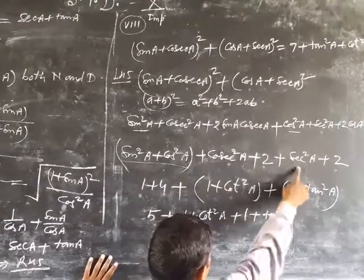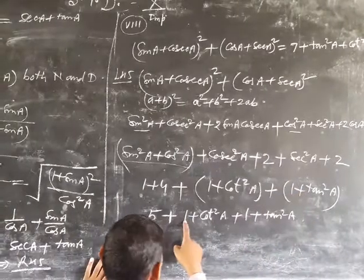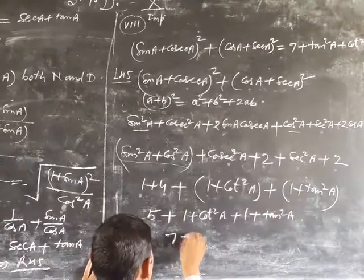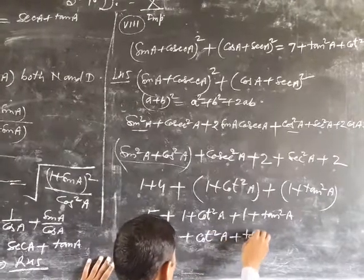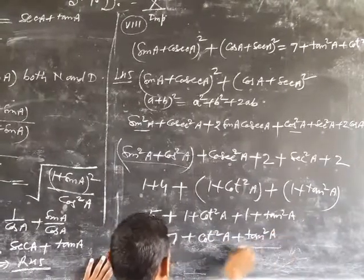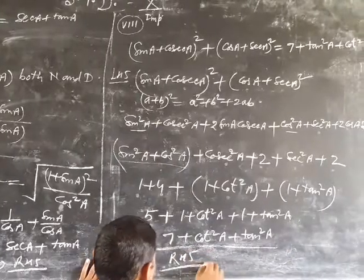Here, cot square is the value of A. cosec square A. 5, 6, 7. 7 plus cot square A plus tan square A. This is right hand side.